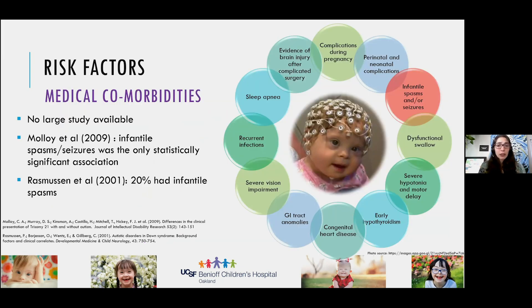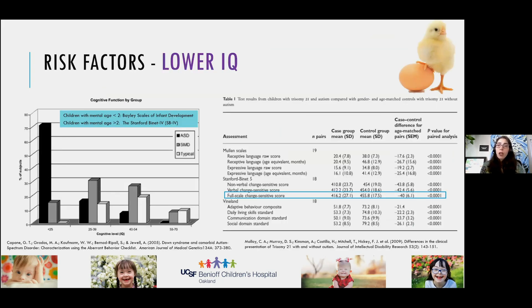Are there medical conditions that put a child with Down syndrome at higher risk for developing autism? This question is still very much to be answered. In studies that have been published, we found only one medical condition statistically significantly associated with higher risk: infantile spasms. Lower IQ also seems to be associated with an increased chance of having autism — though it may be a chicken-or-egg scenario, as someone with a dual diagnosis is harder to test cognitively. However, if someone is testing at lower IQ and exhibiting autistic behaviors, they warrant further evaluation.